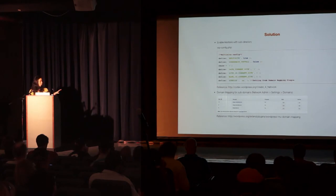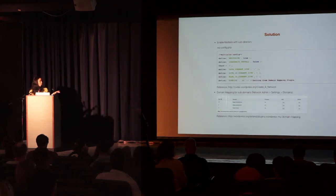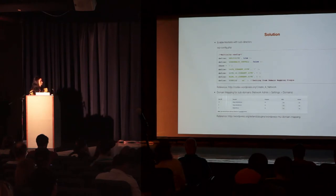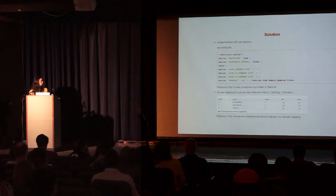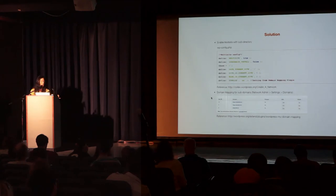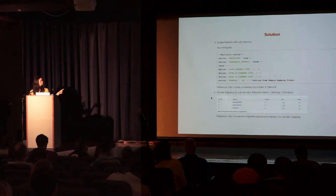For the Domain Mapping plugin setup, I'll skip the details since you can find instructions in the plugin documentation. Once set up, there's a file called sunrise.php that you move to your wp-content folder and set a flag in wp-config. After creating all the sites, you go to Network Admin > Settings > Domains and add the sub-domains you need. For our case, we needed three or four. For the site ID field, note that it corresponds to the blog_id in your wp_blogs table — or whatever prefix you use — so make sure it maps correctly to the domain you set up.